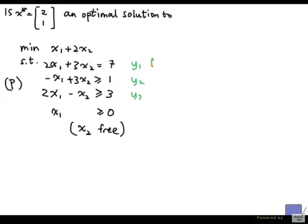y1 can be free because the constraint is equality, y2 will have to be non-negative, y3 will be non-negative as well.